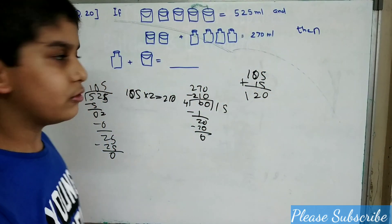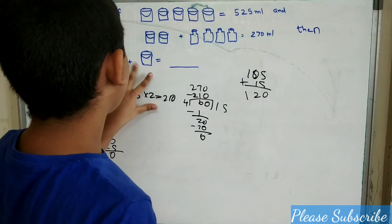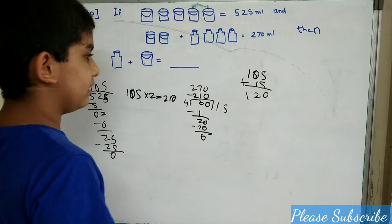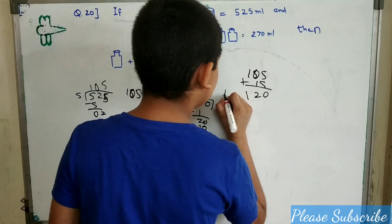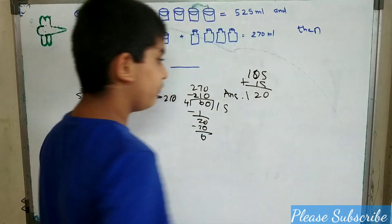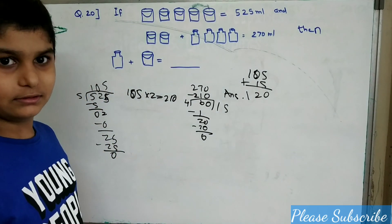120. The addition of 1 bottle and 1 bucket is 120 ml. So our answer is 120.